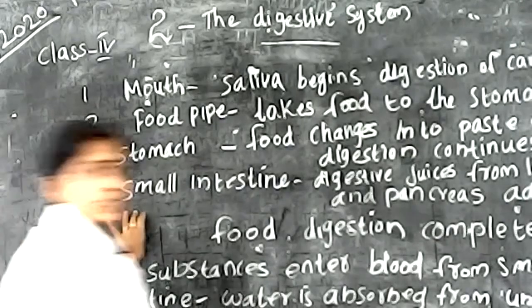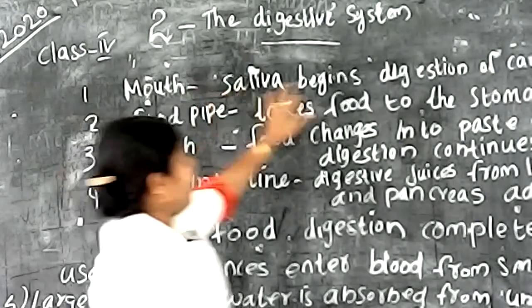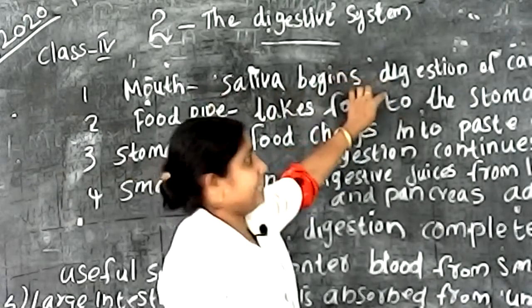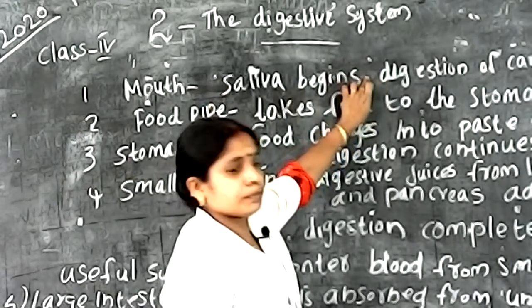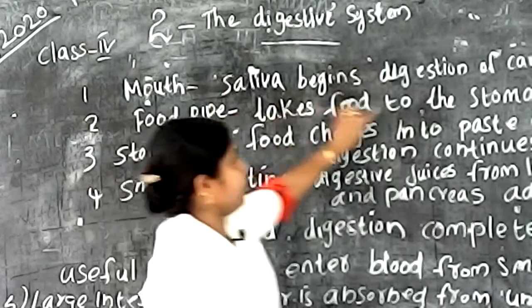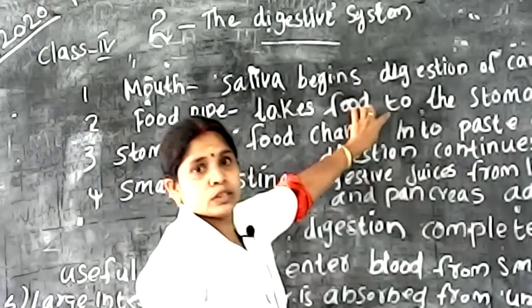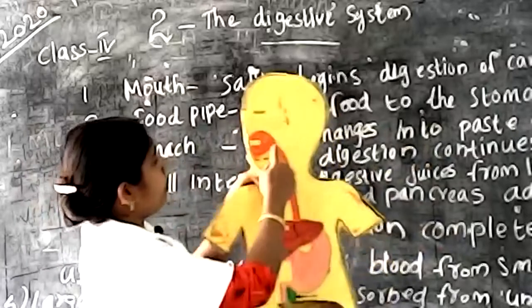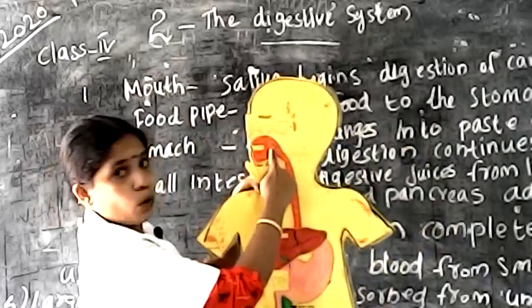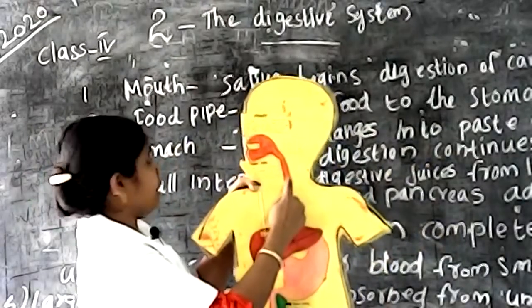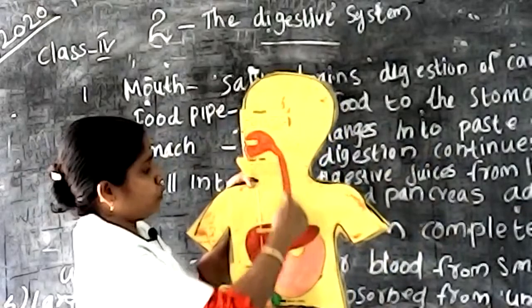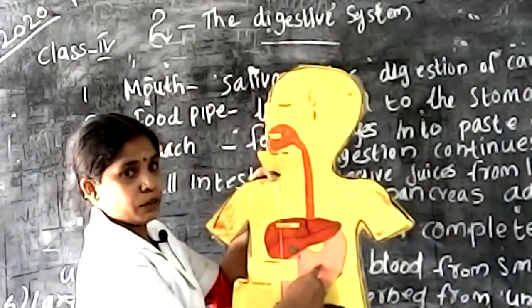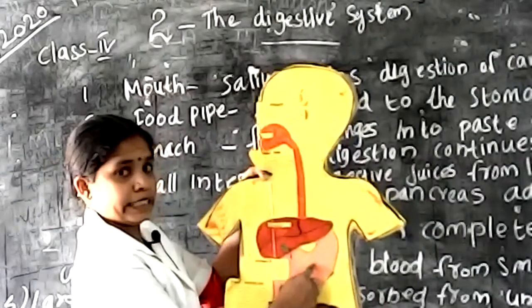Organs of the digestive system. First one, mouth: saliva begins digestion of carbohydrates. Next one, food pipe: takes food to the stomach. Stomach: food changes into paste and digestion continues.